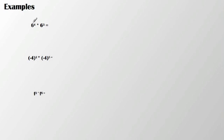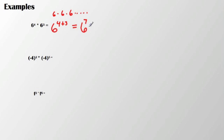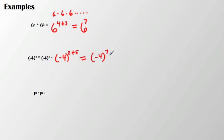We can see that in a couple of examples. I have 6 to the fourth times 6 to the third. Instead of writing out 6 times 6 times 6 and so forth, I can just take that base, add my exponents together, and then I have 6 to the seventh. Same thing over here: I have negative 4 in parentheses squared times negative 4 in parentheses to the fifth. So I take that negative 4 as my base, add the exponents together, and I'm left with negative 4 to the seventh.